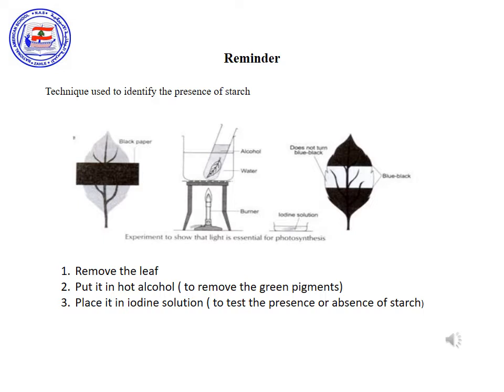We place the leaf in hot alcohol to discolor it, and then in iodine solution to test the presence or absence of starch. If starch is present, then we can say that photosynthesis occurred. However, if it is absent, then one of the essential nutrients is absent.